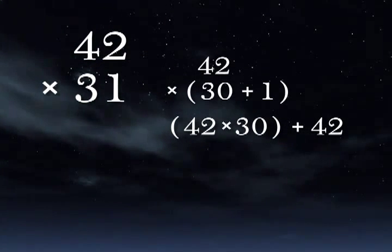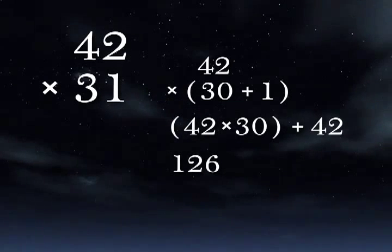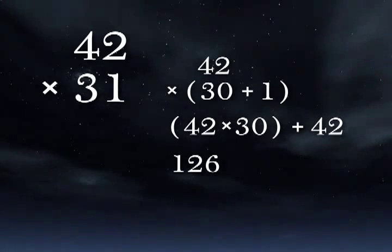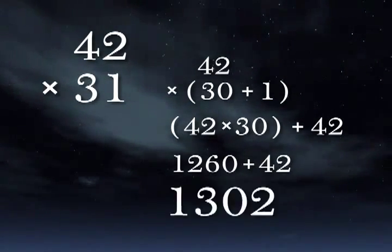So 3 times 42 is 126. So 30 times would be 1260. Now we're going to add the 42 and we get 1302.